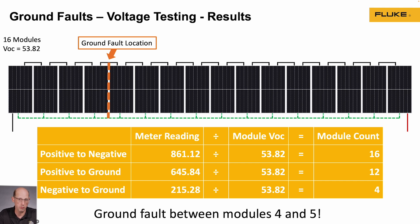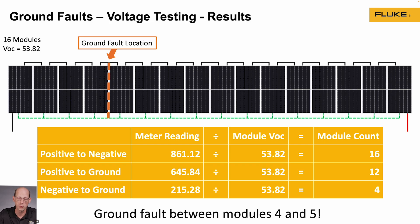With this information, I can go out into the field, get my diagram out, figure out where this string is located, identify the negative end of the string, count in four modules, and then do a visual inspection to see if I can identify the cause of the ground fault.